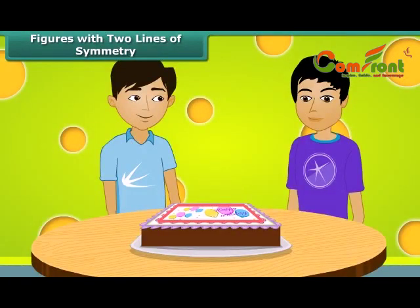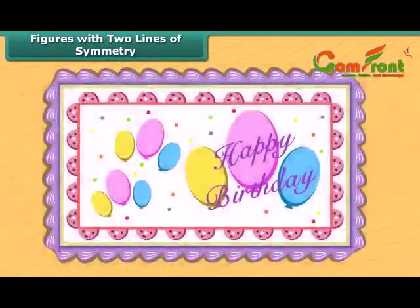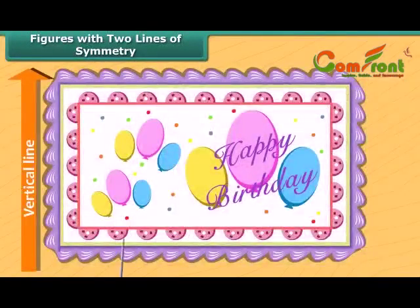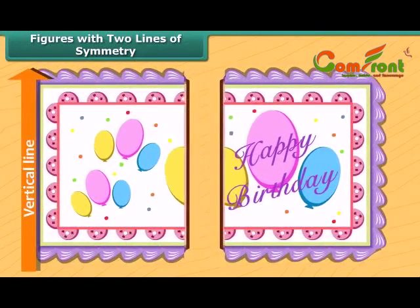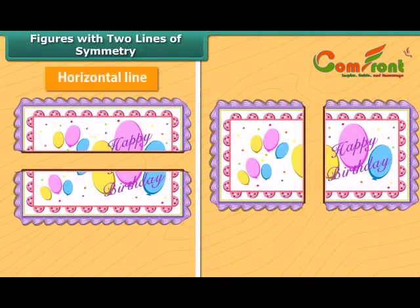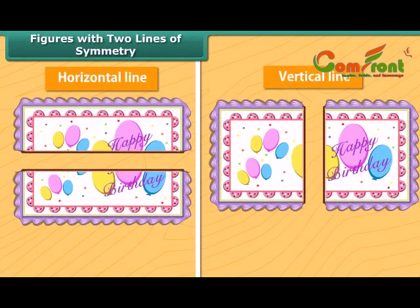Manu and Mrinal have one rectangular cake. Each of them wants an exact half of it. The cake can be divided in two ways to give equal halves. It can be divided along the horizontal line so that its two halves match each other, and it can also be divided along the vertical line. So the cake has two lines of symmetry along which it can be divided to give two identical halves.